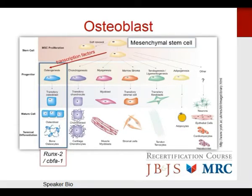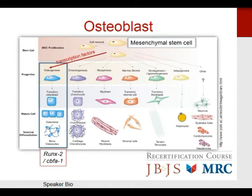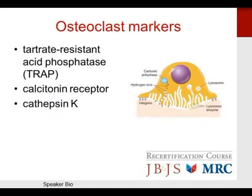The interplay between RANK and RANK ligand is very important for osteoblast-osteoclast communication. RANK is a receptor on osteoclasts. RANK ligand is a protein produced by osteoblasts that stimulates osteoclasts. Osteoprotegerin is also produced by osteoblasts but inhibits osteoclasts. So RANK ligand stimulates osteoclasts, osteoprotegerin inhibits osteoclasts — both produced by osteoblasts. You can remember: osteoprotegerin keeps the bone in.